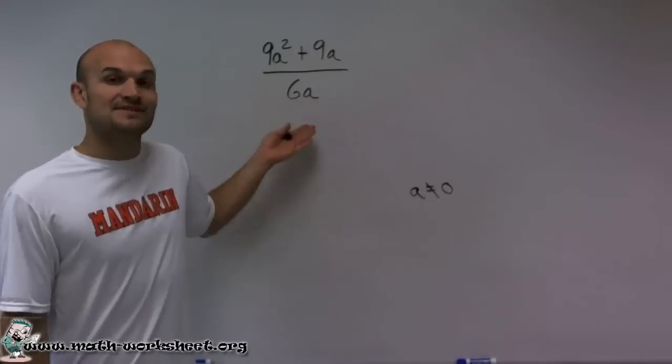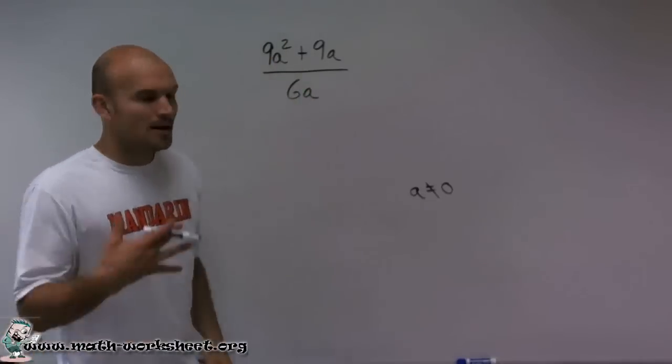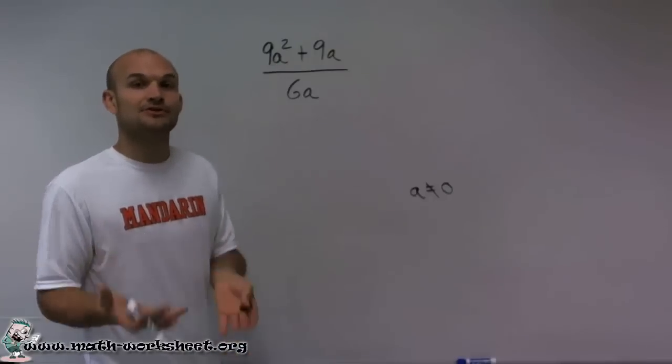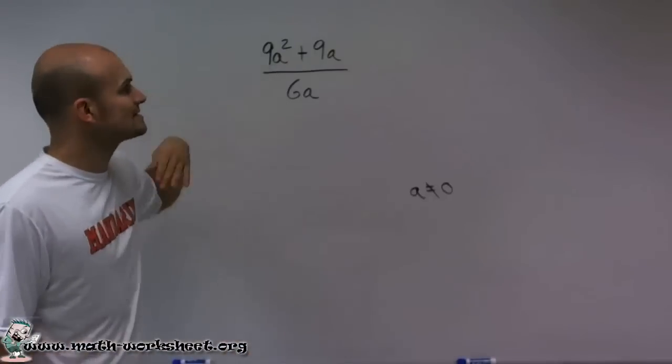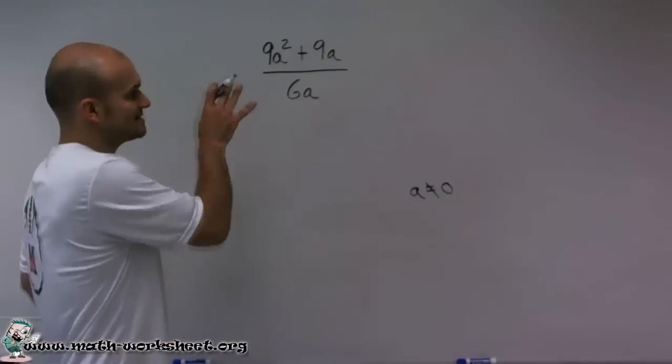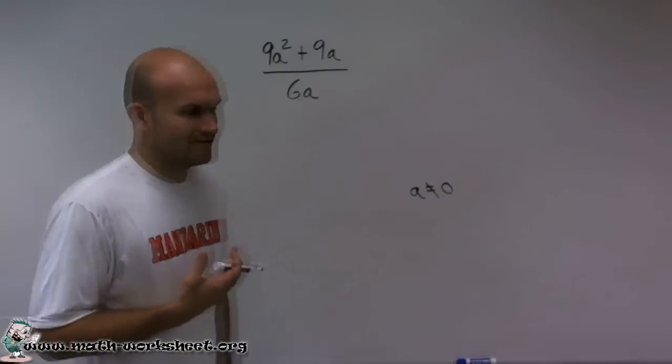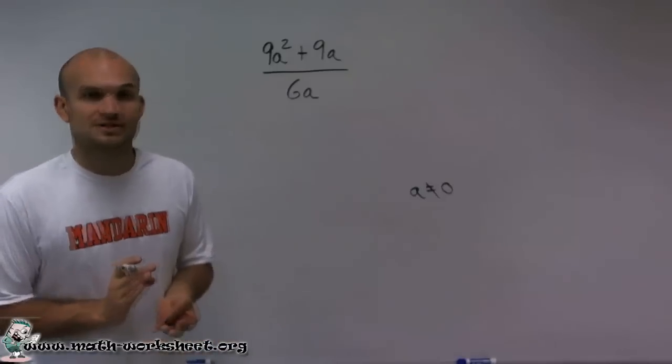Because if a equals 0, then I have 0 on the bottom. But I need to make sure now that I'm going to use my simplified version. So now I need to simplify that. And to simplify this problem, I'm going to work on the numerator and the denominator separately.